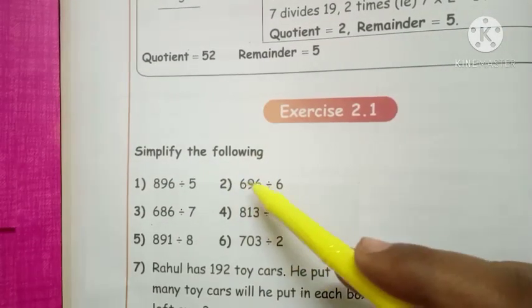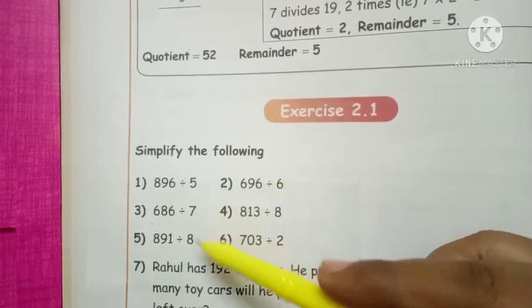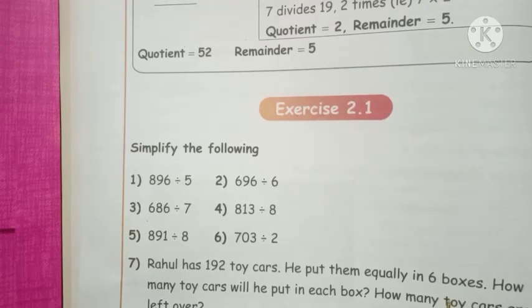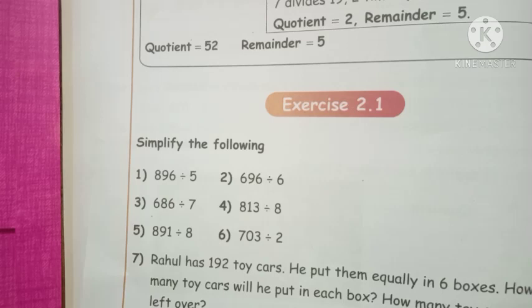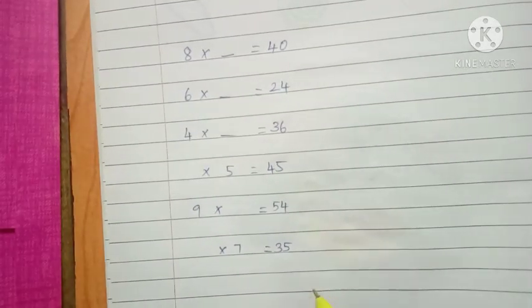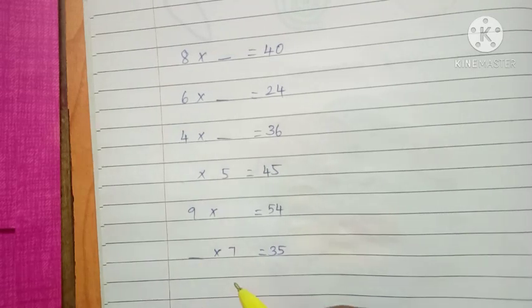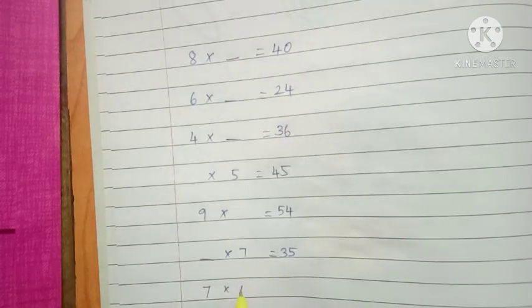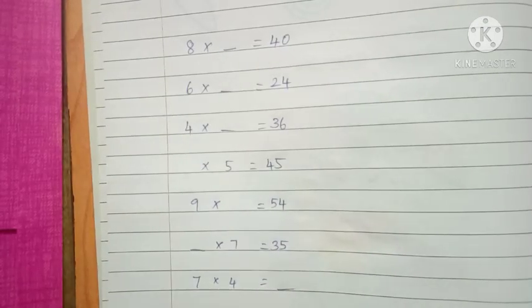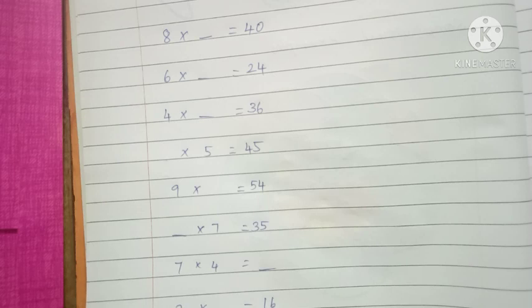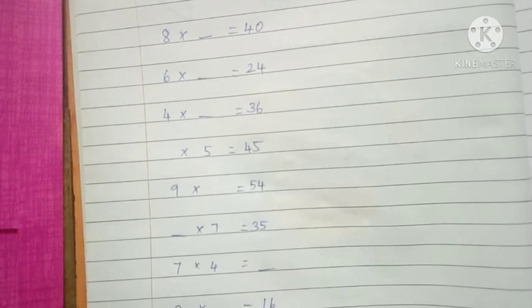Exercise 2.1 — simplify the following. You are given sums using the 5, 6, 7, 8, and 9 times tables. Learn the tables thoroughly — that is the only way to do division correctly. Practice the sums yourself and find the missing numbers. Learn the tables: 5, 6, 7, 8, and 9 tables. Okay children, thank you.